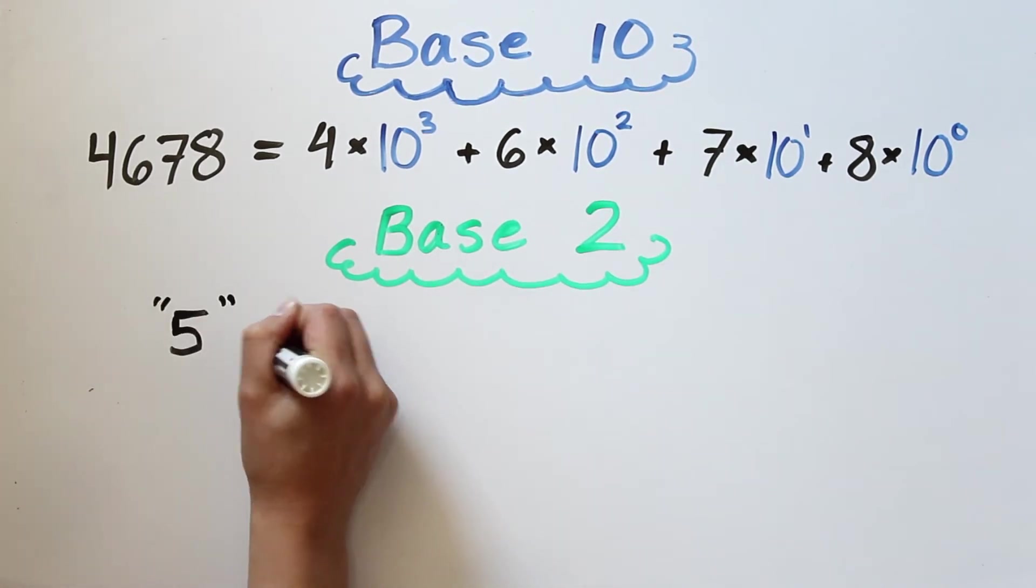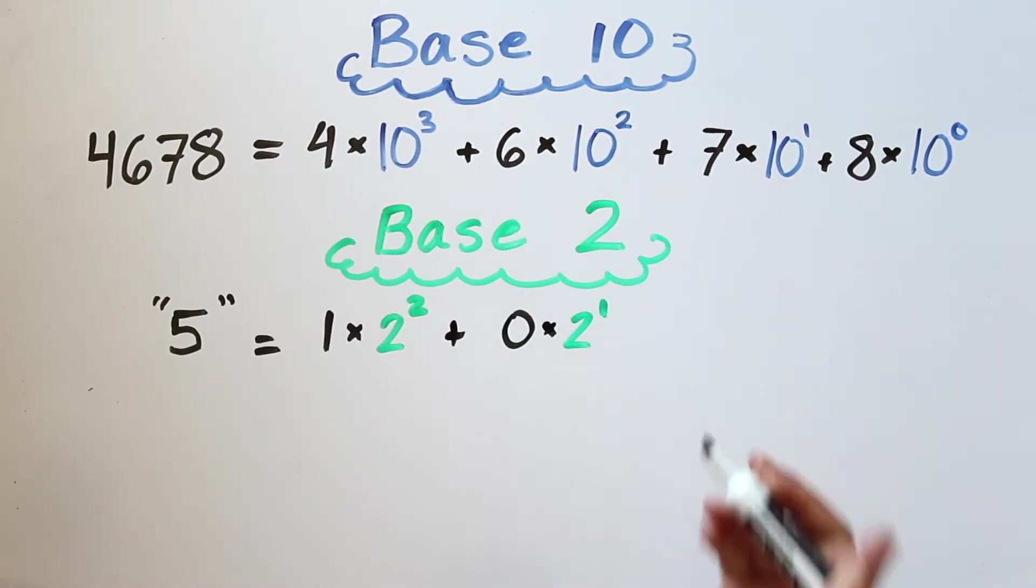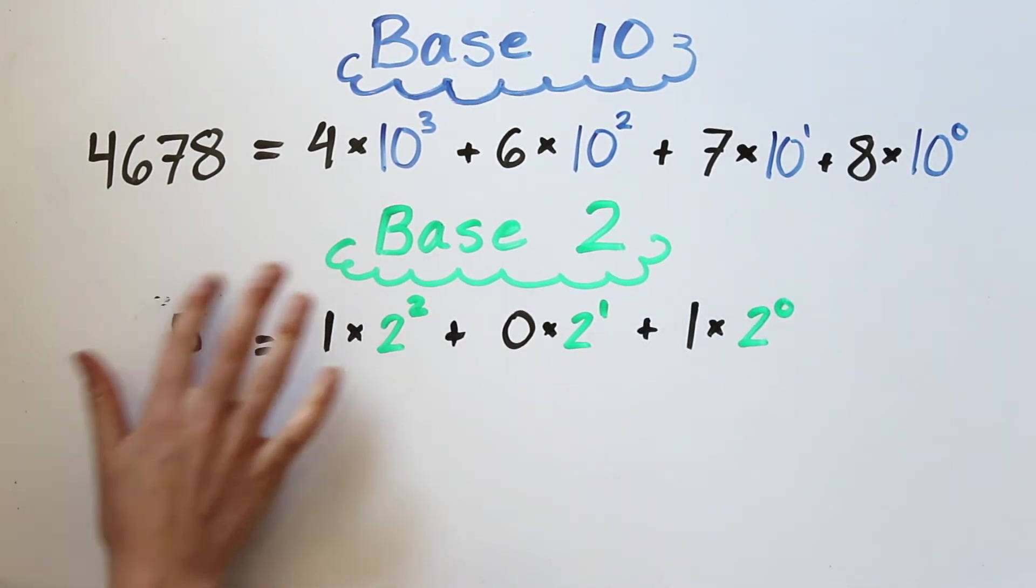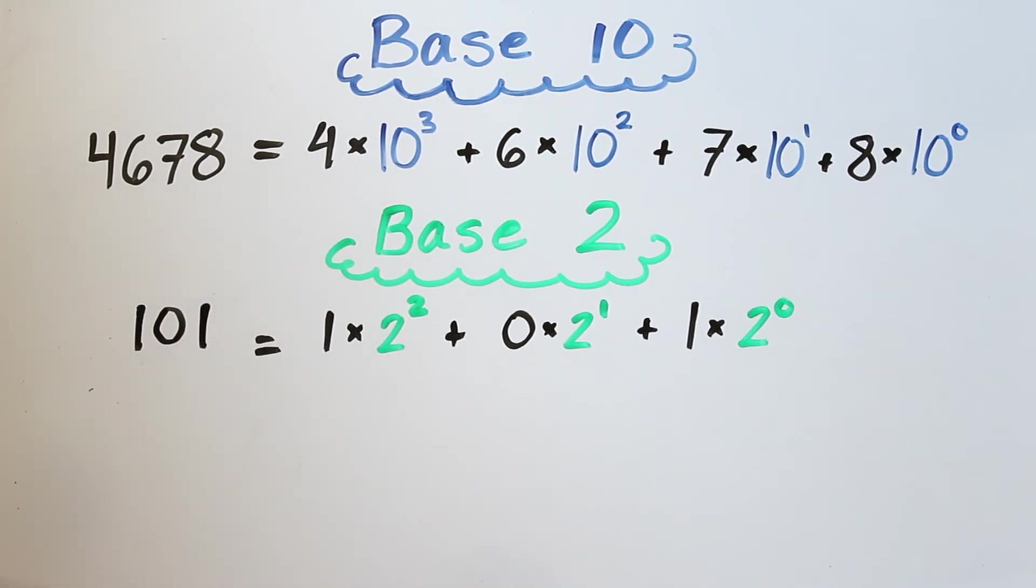If we wanted to represent 5 in binary, first we write it as powers of 2. 1 times 2 squared plus 0 times 2 to the first power plus 1 times 2 to the 0. Then we simply represent the number using only the coefficients. So in binary, we write 5 as 101.